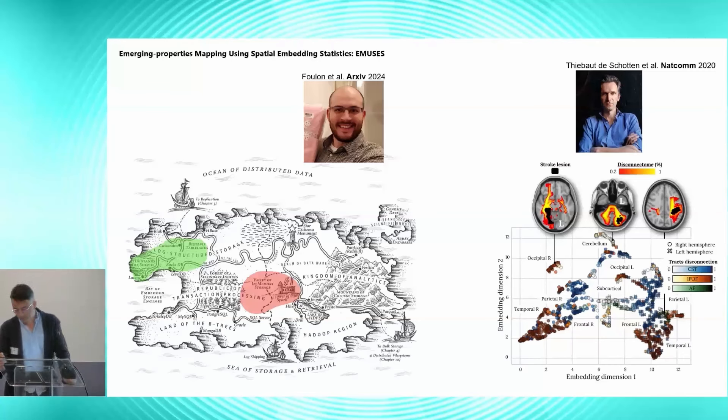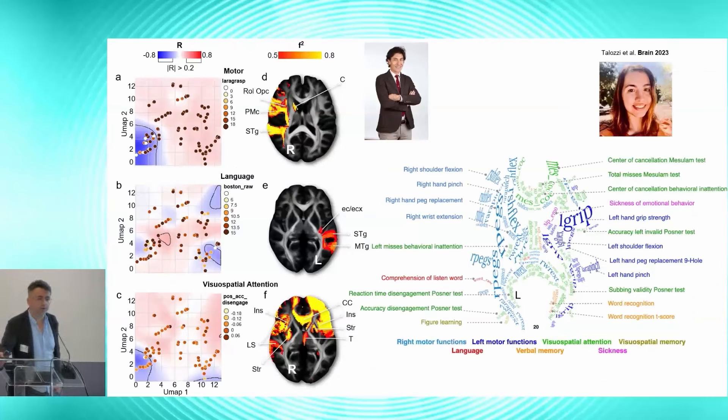But for that we needed a big number, so we collaborated with Parashkev Nachev in London that provided us 1,333 stroke lesions that allowed us to create this two-dimensional space of what are the typical disconnections that happen in stroke. You can see here at the bottom right. And you see that patients that have similar disconnection clustered together, and the ones that have a different disconnection are far apart from the ones that clustered. And then we imported into that space the dataset from Maurizio Corbetta that is very richly explored in terms of behavior and started running our statistics to define territory places of disconnection of the brain that will be typically associated with deficits at specific tests such as motor language or visuospatial attention.